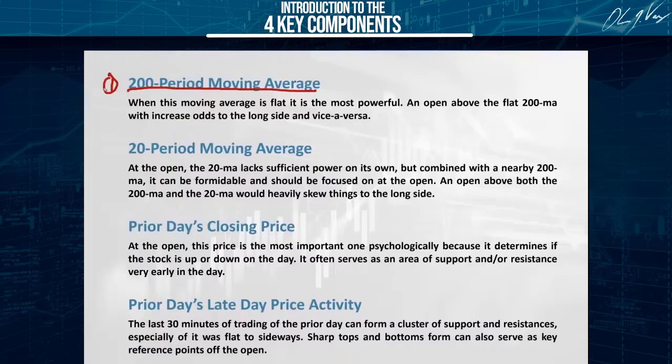It doesn't matter if you're trading a two-minute timeframe — it's a 200-period moving average of the two-minute chart. If you're trading a five-minute timeframe, it's the 200-period moving average of the five-minute chart. If you're trading a daily timeframe, it's the 200-period moving average of the daily timeframe. Timeframes don't matter — whatever timeframe you trade, and this is on all markets.